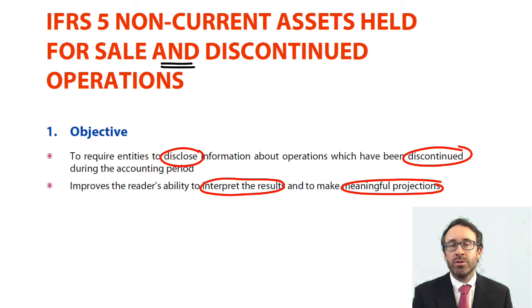The structure of the next few videos will break it down into two parts, even though it is one standard. We'll look at non-current assets held for sale first with an example, then discontinued operations second with some examples. Strap yourselves in. I'm sure you'll enjoy IFRS 5, and I'll see you all shortly for the first video on non-current assets held for sale.